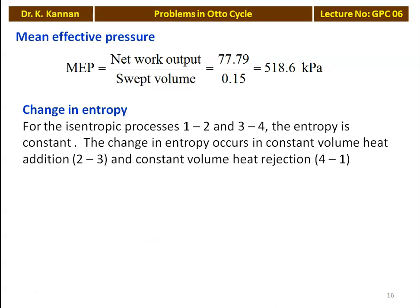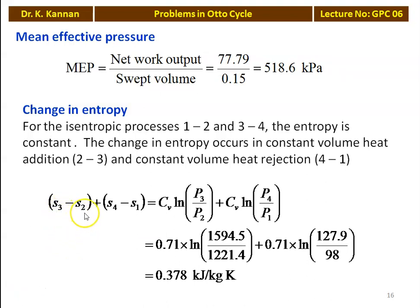The change in entropy for the isentropic processes 1 to 2 and 3 to 4 is zero, as entropy is constant. Entropy change occurs during constant volume heat addition (2 to 3) and constant volume heat rejection (4 to 1). The change in entropy S3 - S2 and S4 - S1 is calculated as: Cv × ln(P3/P2) + Cv × ln(P4/P1) equals 0.71 × ln(1594.5/1221.4) + 0.71 × ln(127.9/98) equals 0.378 kJ/kg·K.